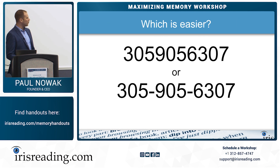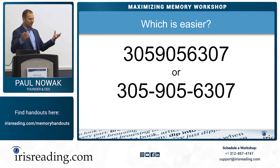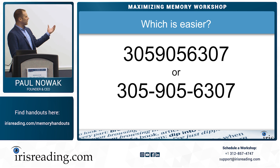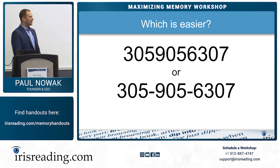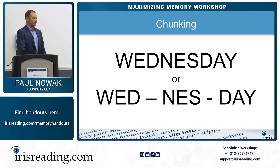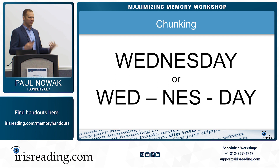Here's another example — which number is easier to memorize, the top or the bottom? The bottom one, right? Why is the bottom one easier? It looks like a phone number and it's broken up into parts. If you look long enough, you'll see these numbers are exactly the same — but our mind perceives the top one as overwhelming. The bottom one feels more manageable, and that's because of something called chunking — also called grouping, categorizing, or clustering. It's how we learn to spell the word Wednesday: I would break it down — 'Wed-nes-day' — to remember the spelling.